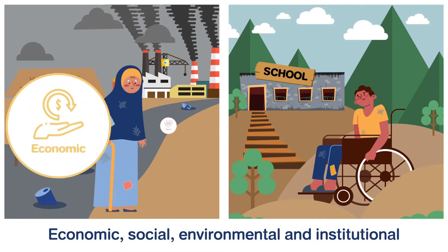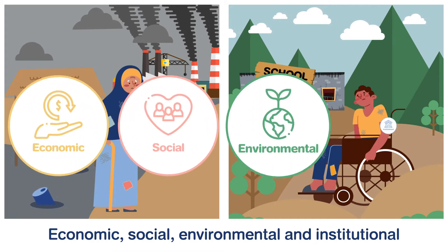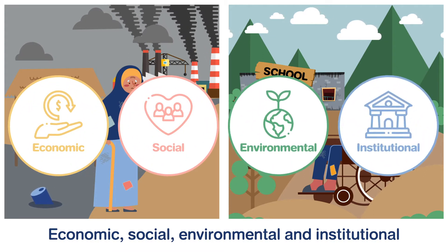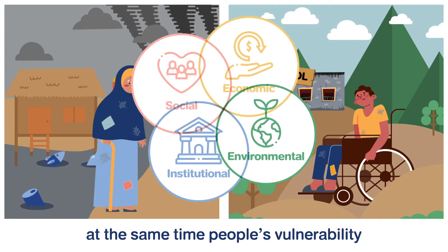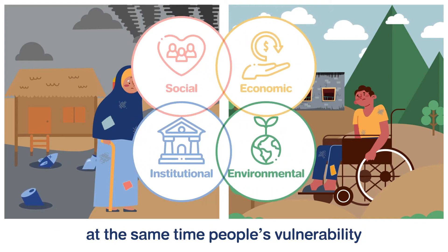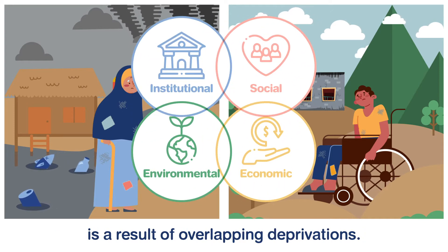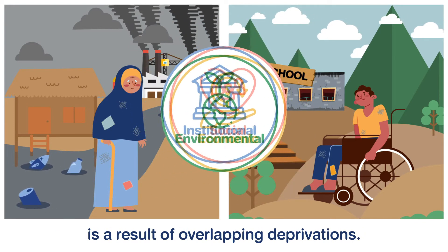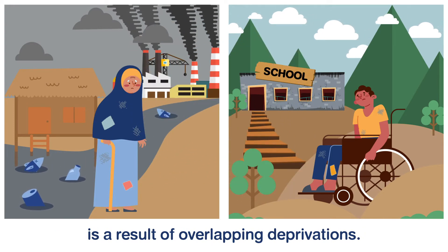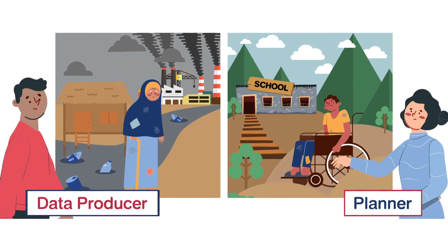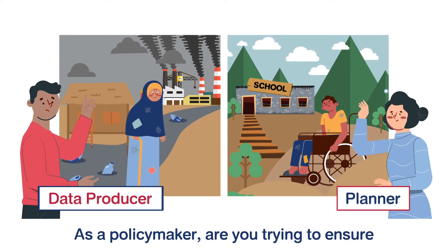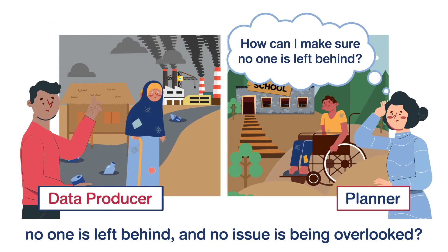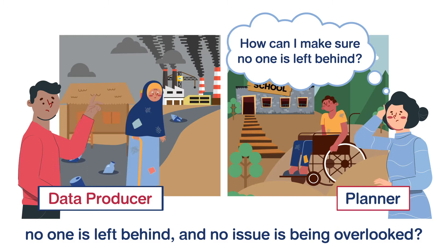Economic, social, environmental and institutional dimensions of development are interconnected. At the same time, people's vulnerability is a result of overlapping deprivations. As a policy maker, are you trying to ensure no one is left behind and no issue is being overlooked?